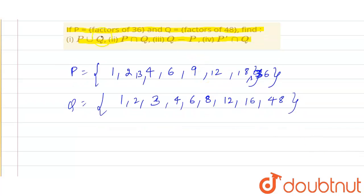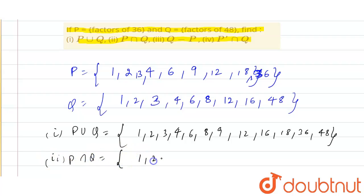Now we have to find the value of the first part, which is P union Q. So that equals 1, 2, 3, 4, 6, 8, 9, 12, 16, 18, 36, and 48.